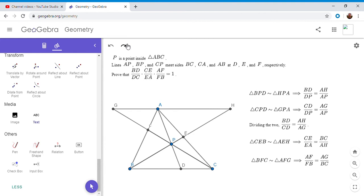And similarly, BFC is similar to AFG. And so we have AF over FB equals AG over BC. So we have all three fractions that we want.